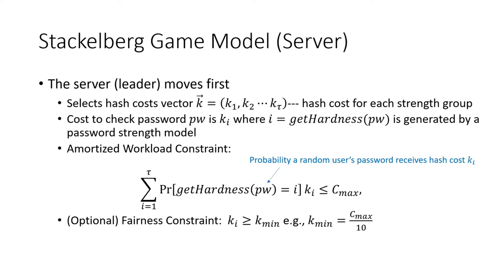Let's introduce our Stackelberg game-theoretic model. In a Stackelberg game there are two parties: a leader and a follower. The authentication server is the leader and moves first, picking a cost vector where ki controls the cost of passwords in group i. The GetHardness function outputs a group i ranging from 1 to tau — for example, with tau equal to 3, passwords are classified as weak, medium, or strong, each with a different cost parameter.